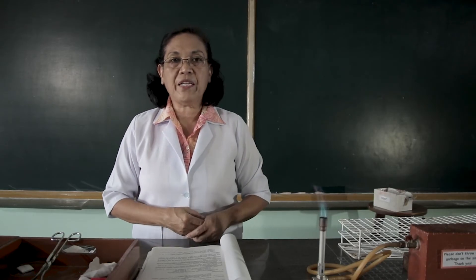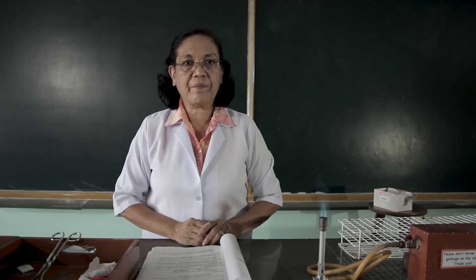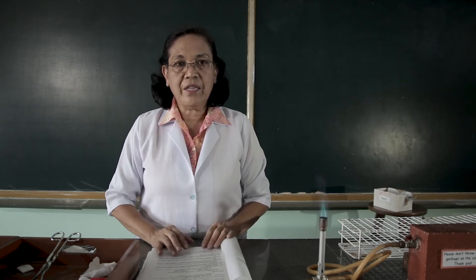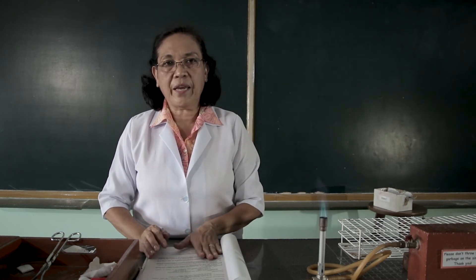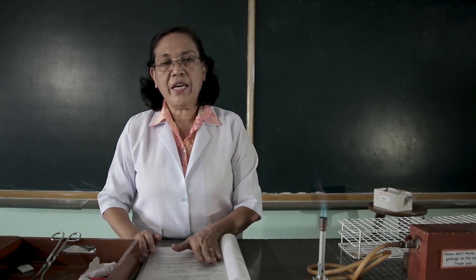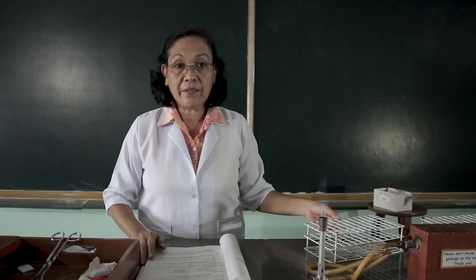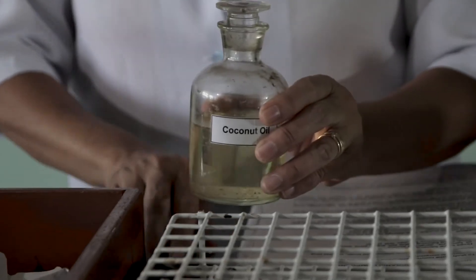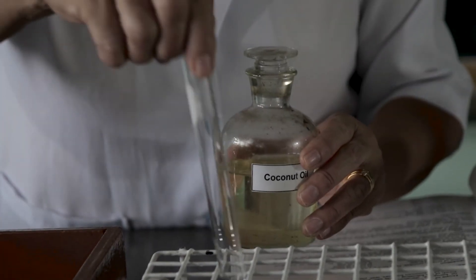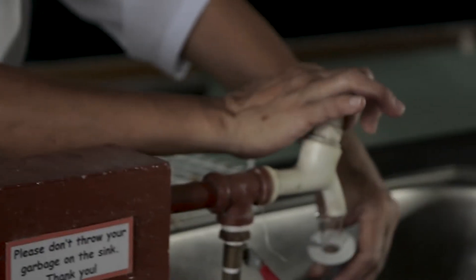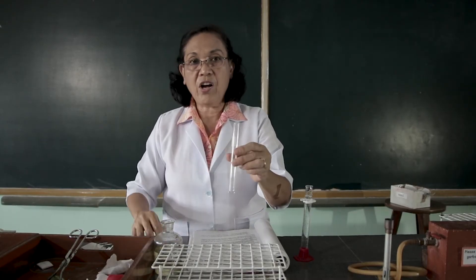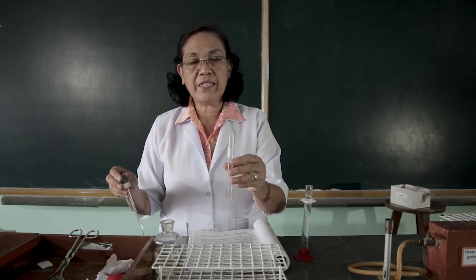The next property that we are going to prove is solubility. What do we mean by solubility? Solubility is the ability of a substance to be dissolved in a solvent. We are going to use here the table salt and the coconut oil, and our solvent will be water. Let's get some drops of the coconut oil.